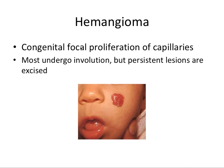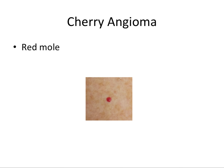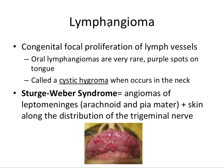A hemangioma is a congenital focal proliferation of capillaries — again involving blood vessels but on a larger scale. Most undergo involution as an infant or child ages, but persistent lesions should be excised, mostly for aesthetic reasons. A lymphangioma is a congenital focal proliferation of lymph vessels. Oral lymphangiomas are actually super rare and manifest as little purple spots on the tongue. When it occurs on the neck, it's called a cystic hygroma — technically a lymphangioma of the neck.